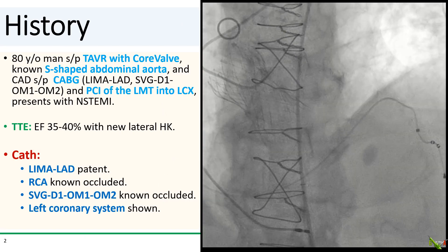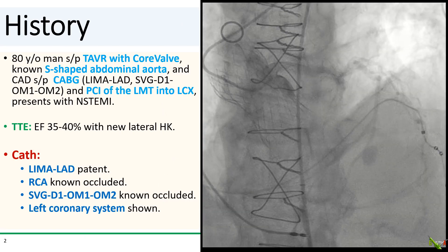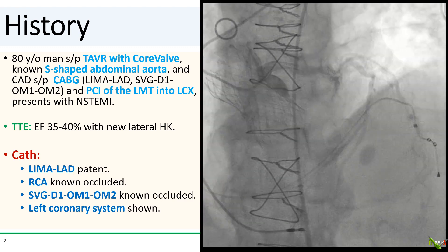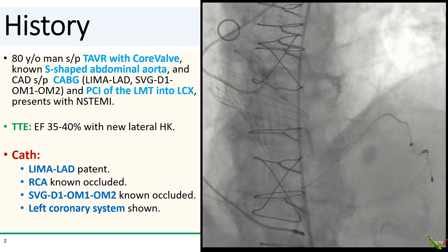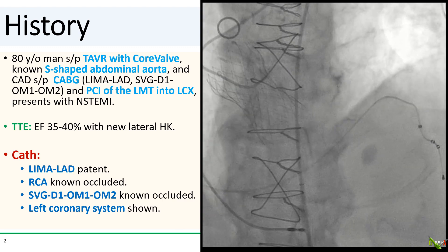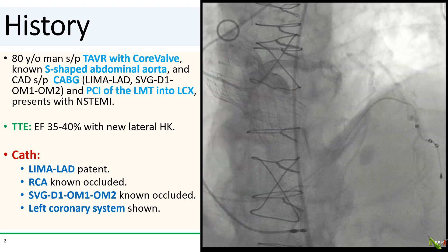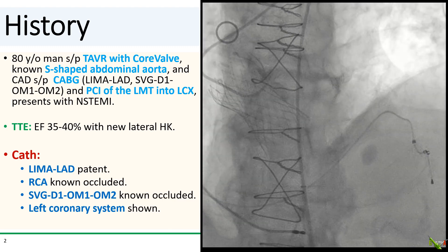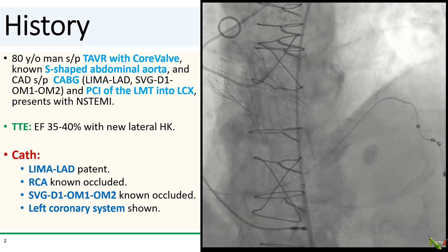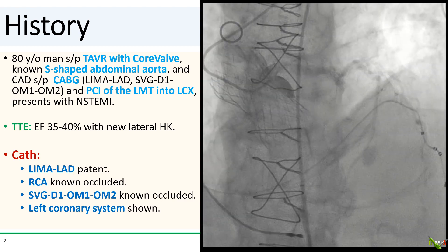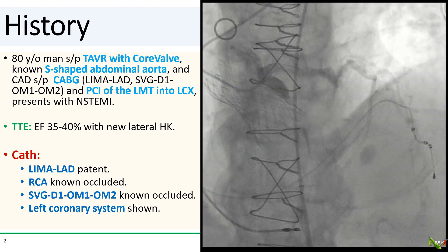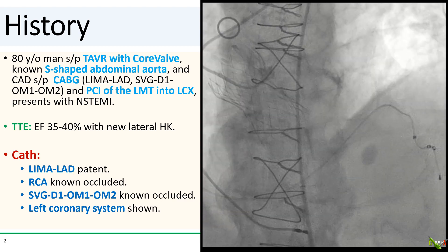We have an 80-year-old man who underwent a difficult TAVR with CoreValve three years ago. He has a tortuous abdominal aorta. He also has CAD, and 10 years ago he underwent CABG with a LIMA to the LAD and a skip vein graft to diagonal, OM1, and OM2.